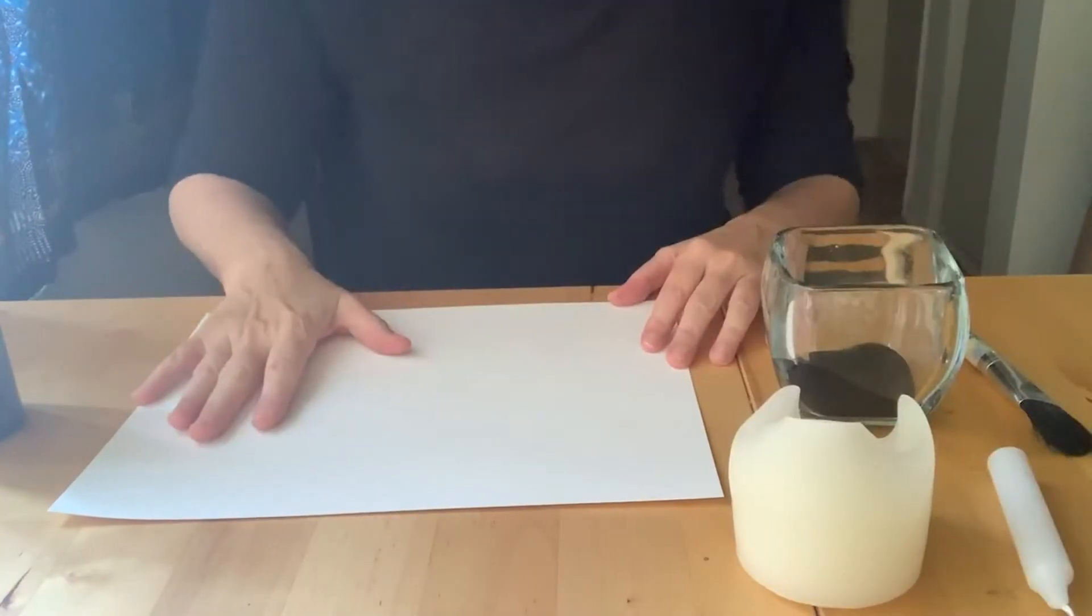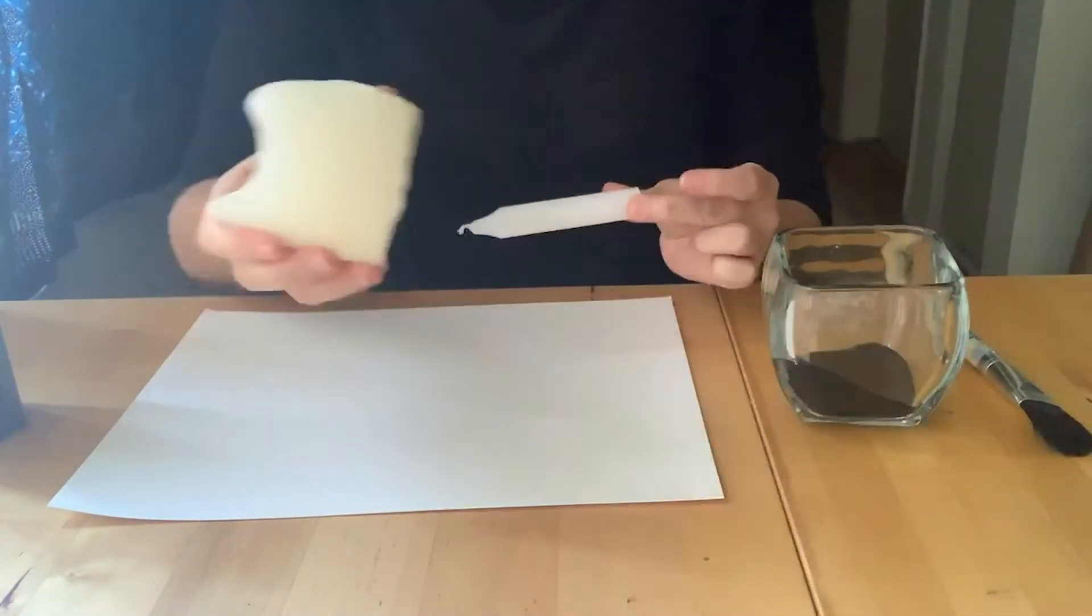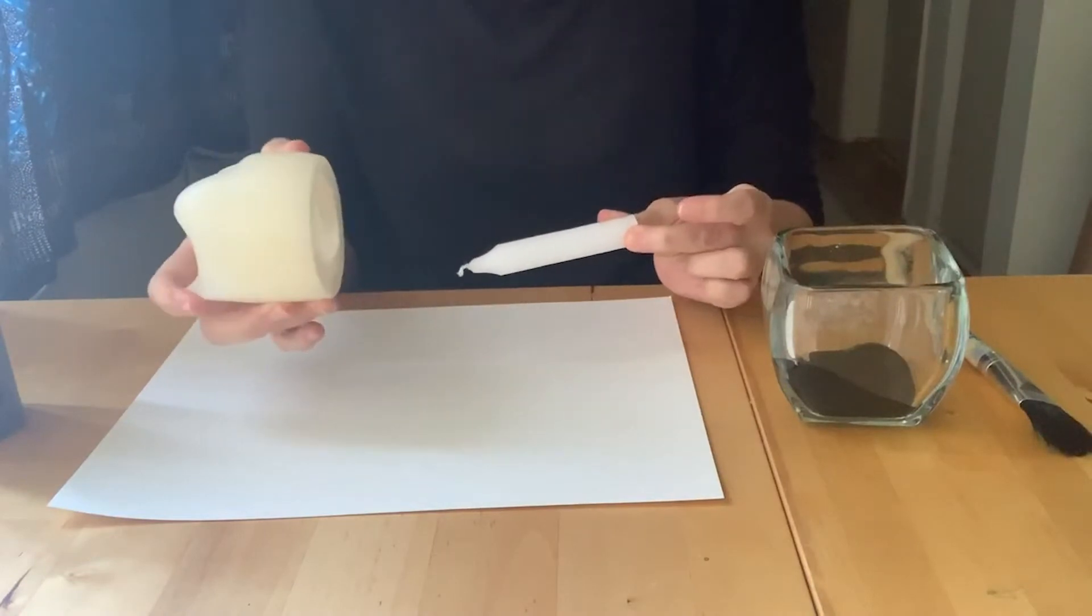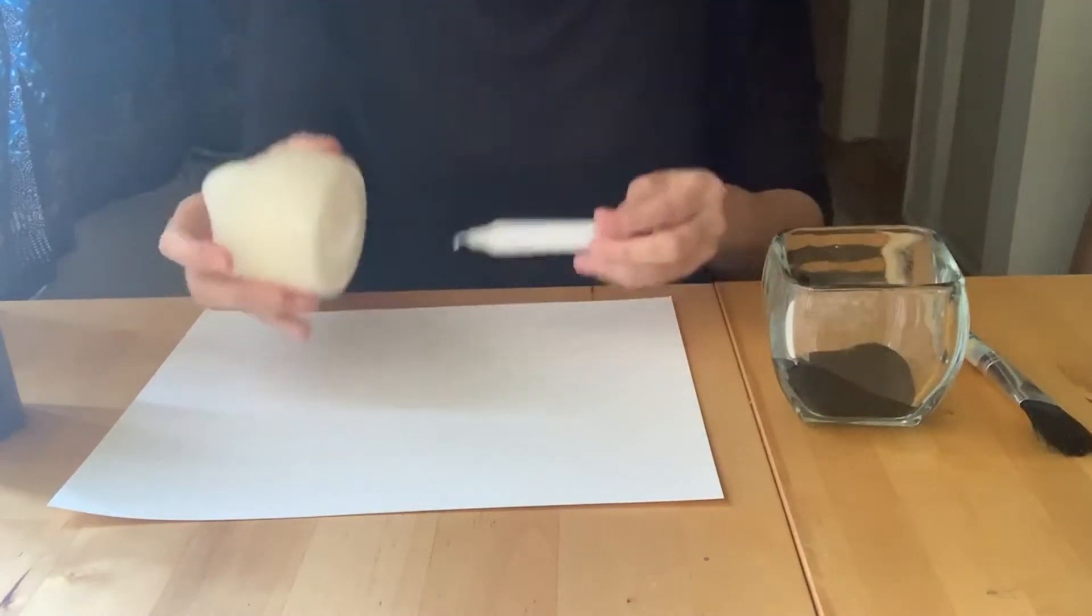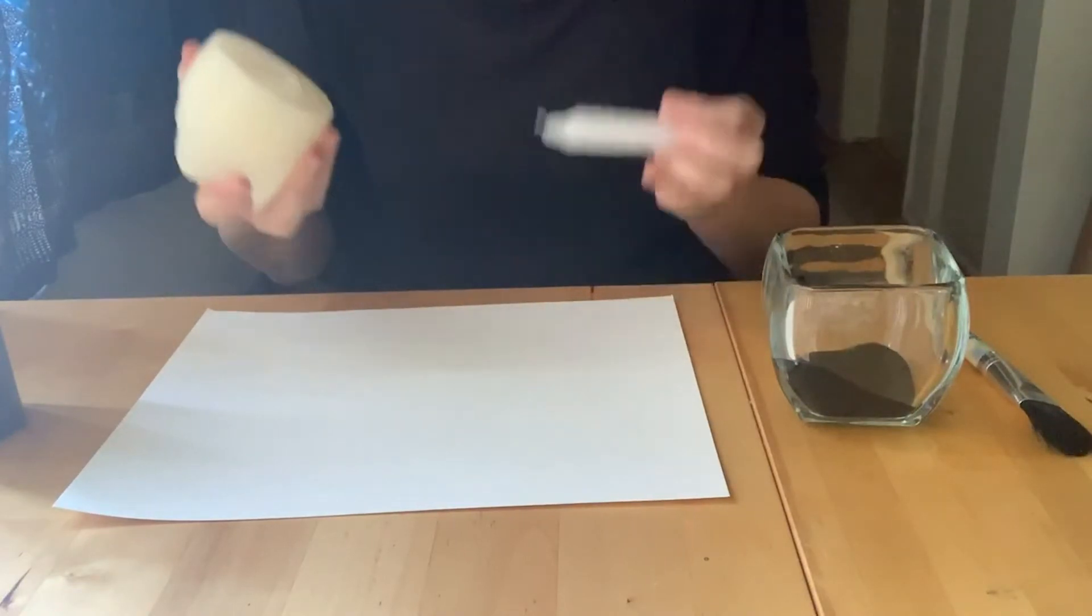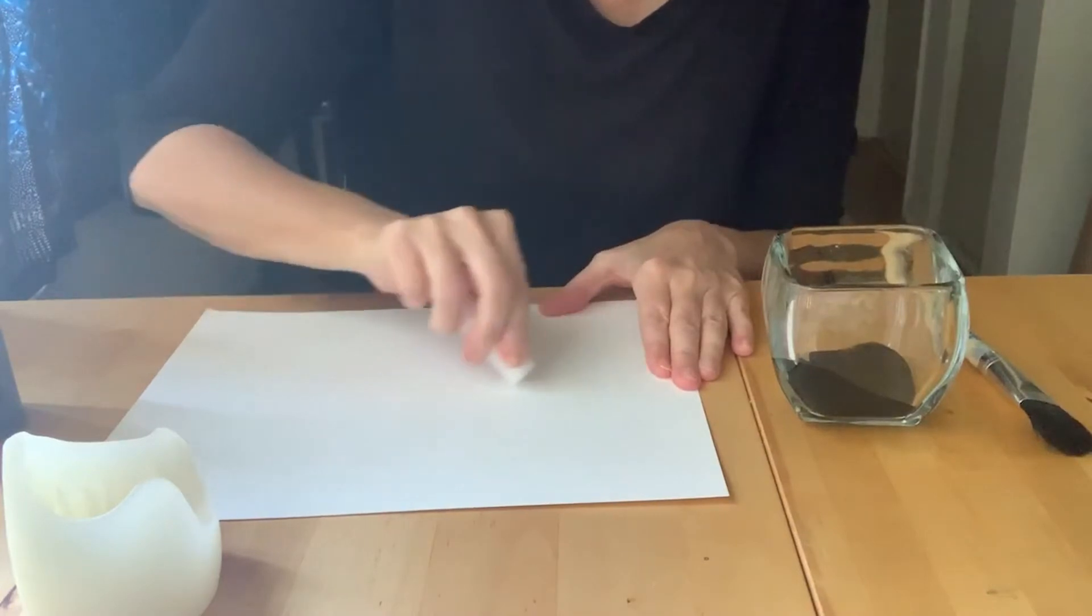So let's start. First thing you're going to do is take your candle or your candle that's already been used and just draw a design onto your white thick paper. Okay, I'm gonna use both. I'm gonna start with my candle.